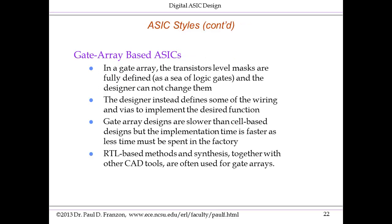The next style is gate array-based ASICs. The transistor-level layers stay the same from application to application. A sea of logic gates are predefined in these wafers, which are pre-made and stored in the fab. For example, you'll have an AND gate at a certain location and an OR gate at another. If your design needs an AND gate, it gets wired in; if it needs an OR gate, that gets wired in. However, many gates that are pre-made are never used, so the functional density of a gate array ASIC is quite a bit lower than that of a standard cell ASIC.